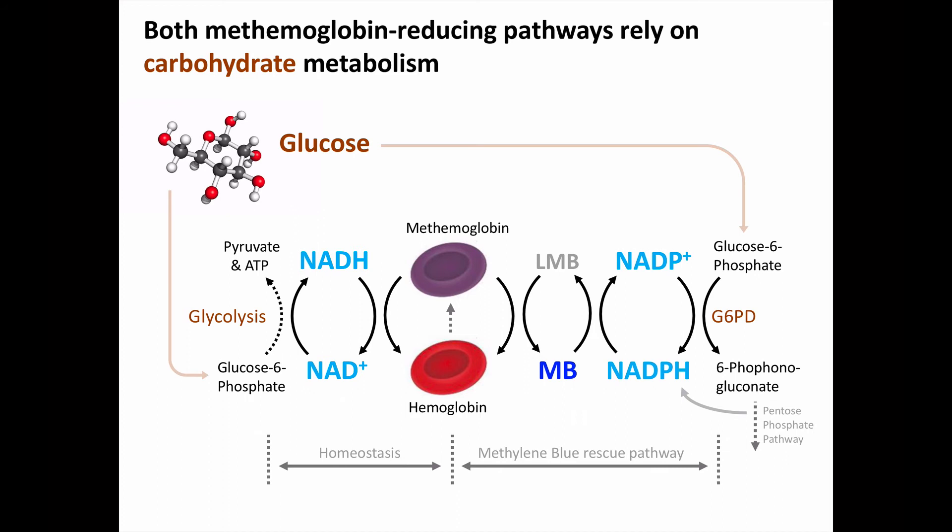Both methemoglobin reduction pathways rely on carbohydrate metabolism to produce the reducing agents NADH and NADPH. Glucose first gets phosphorylated into glucose-6-phosphate, and then glycolysis produces the NADH necessary to maintain normal methemoglobin levels as hemoglobin is continuously being oxidized at low levels. If methemoglobin levels are too high and we treat the patient with methylene blue, glucose-6-phosphate is used to produce NADPH, with the first step catalyzed by G6PD — glucose-6-phosphate dehydrogenase — followed by further NADPH production through the rest of the pentose phosphate pathway.